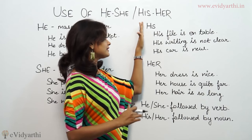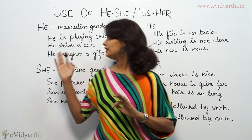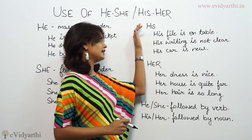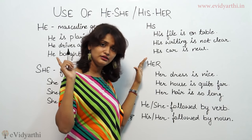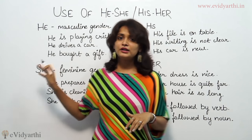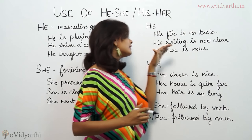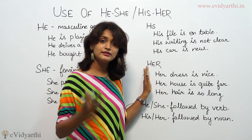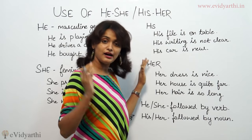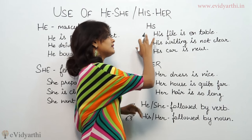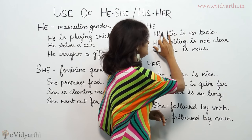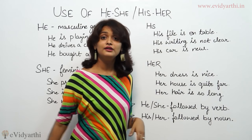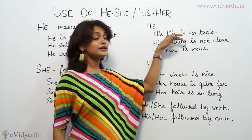In English grammar, 'his' and 'her' are called possessive pronouns. 'His' is the possessive pronoun of 'he,' and 'her' is the possessive pronoun of 'she.' His is used for the masculine and her is used for the feminine. But unlike he and she, after his and her we do not write a verb — after his and her we immediately write a noun. Look at the example: 'His file is on the table.' After 'his,' we write the noun 'file.'